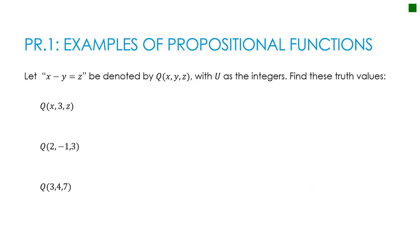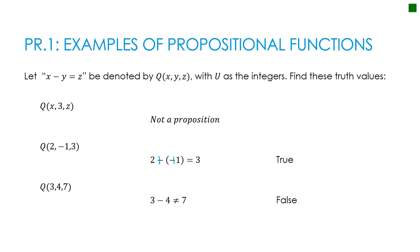Now pause and try three practice problems on your own, then press play to see how you did. For the first one, it's still not a proposition because we don't have values for all variables. For the next one, replacing x with 2, y with negative 1, and z with 3 gives true, because 2 plus negative 1 equals 1. For the last one, replacing x with 3, y with 4, and z with 7 gives a false value.